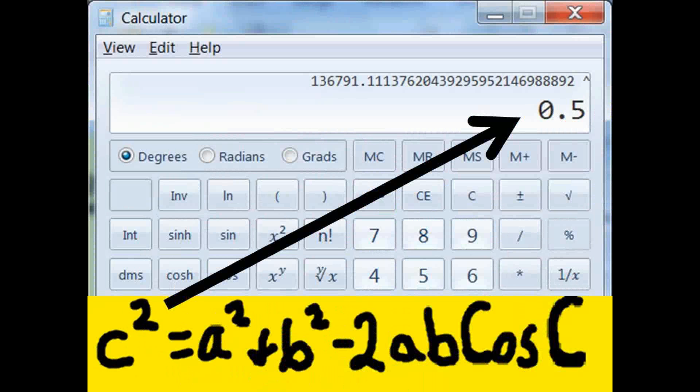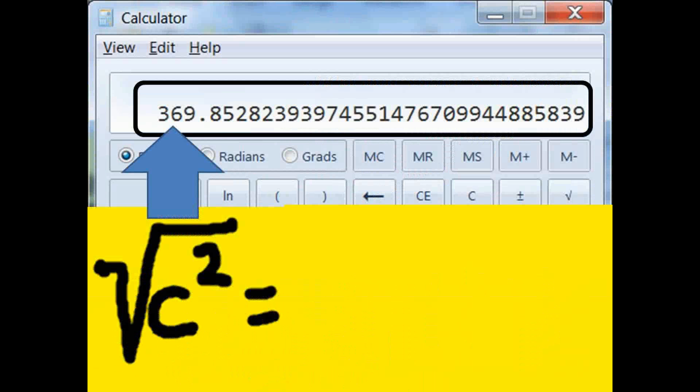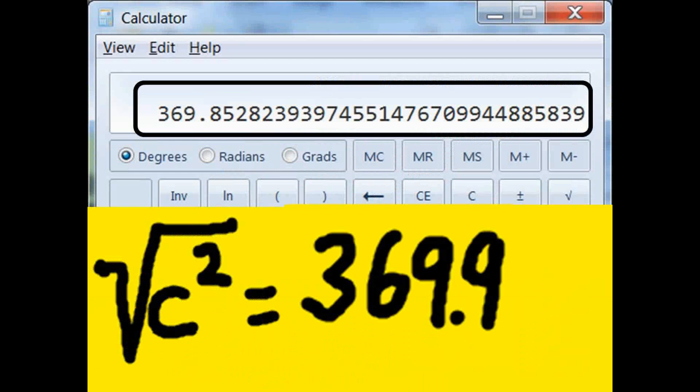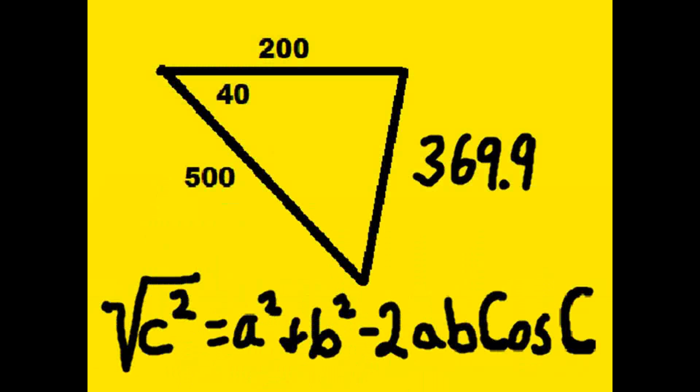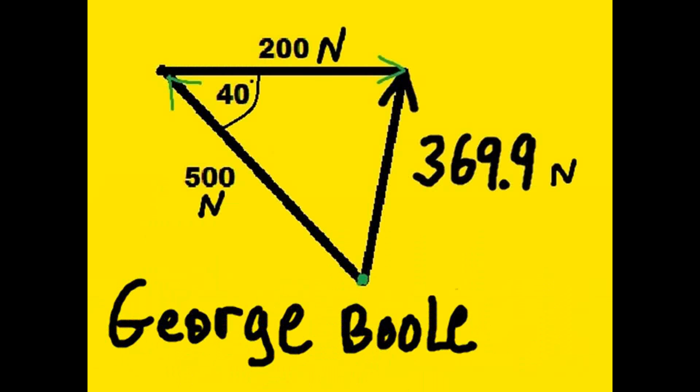290,000 minus 200,000 times cosine 40 gives us c squared. So I got to raise it to the 1/2 power, which is to say take the square root of that number. That gives me this, which I round off to 369.9.